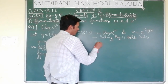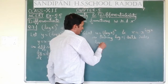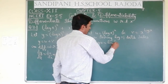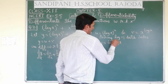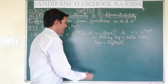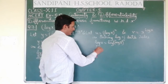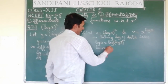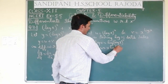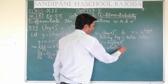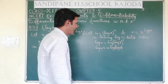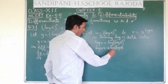So this will become: log u equal to log of (log x) raised to the power x. This will become log u equal to x log(log x), because log m raised to the power n equals n log m — that is the formula we apply here.